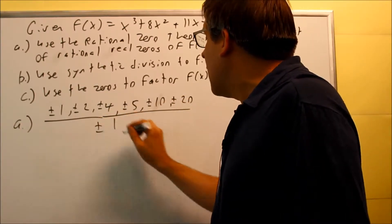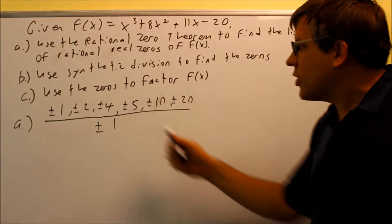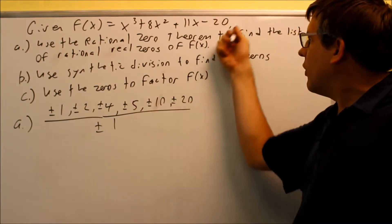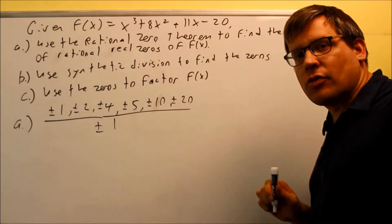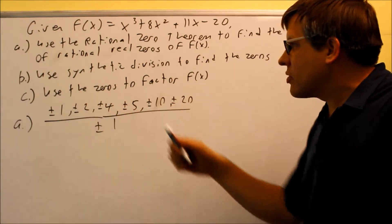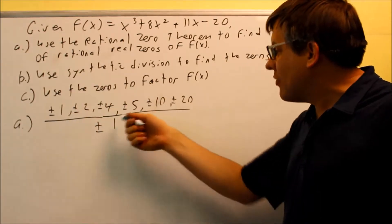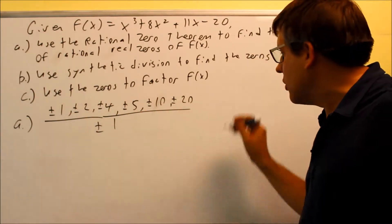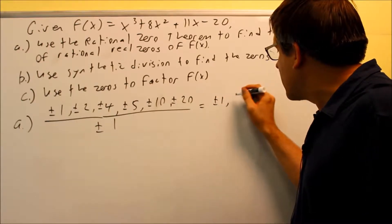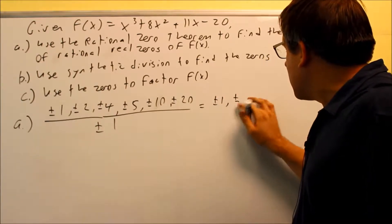On the bottom I'm going to do factors of the first number which is 1. So always factors of the last number divided by factors of the first number. We get this list here but you don't want to leave your answer in that form. You want to take all the numbers on top and divide by the number you have on the bottom.